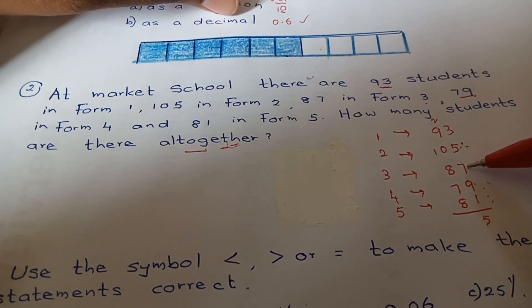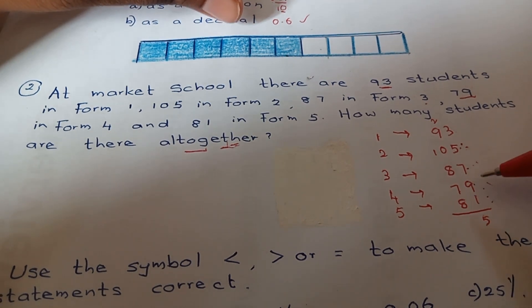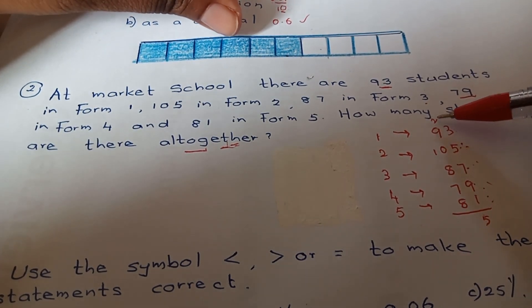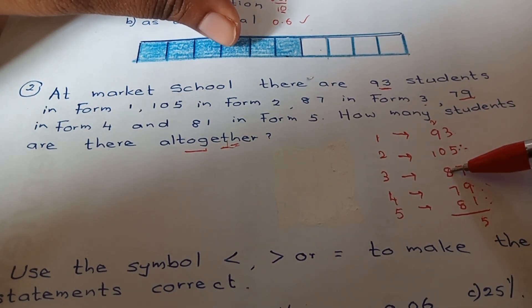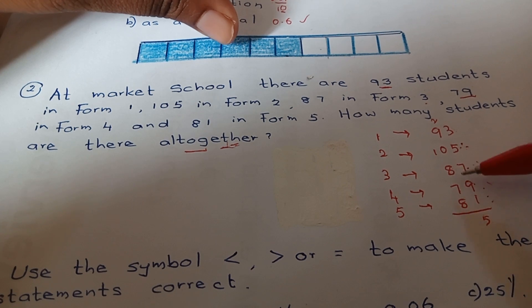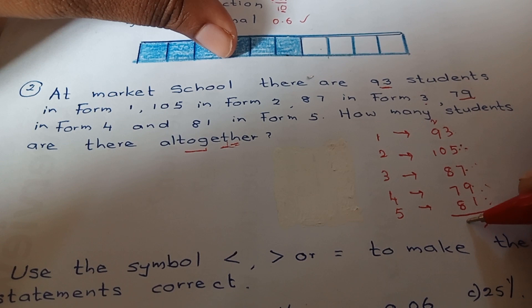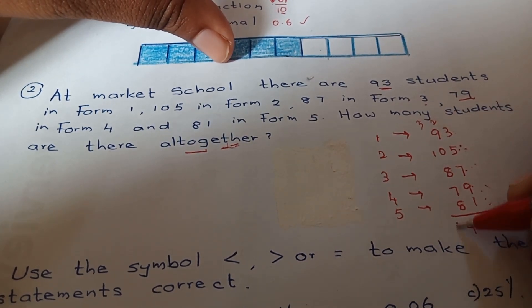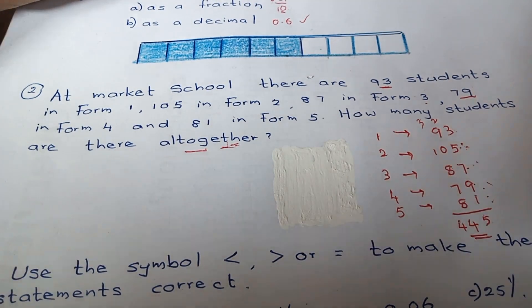Two remains. Two plus 9 is 11, 11 plus 8 is 19, 19 plus 7 is 26, 26 plus 8 is 34. Three remains. Three plus 1 is 4. So altogether there are 445 students.